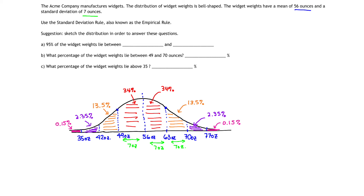We have our empirical rule and all percentages set up, so we're ready to answer the questions. Part A: 95% of the widget weights lie between which two numbers? Knowing the empirical rule, 95% of the widget weights lie within two standard deviations from the mean. So the numbers they lie between are 42 ounces and 70 ounces.